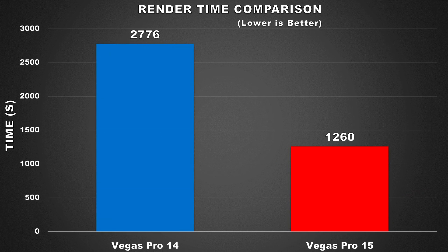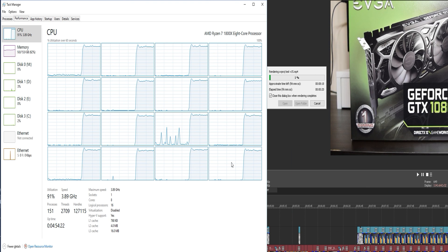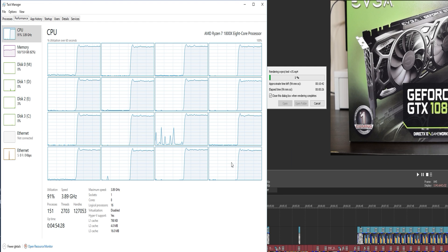So let's go ahead and take a look at the results. I have to say that I'm very impressed because whatever improvements and optimization tweaks they made, it was very effective. With Vegas Pro 14, it took 2,776 seconds or 46 minutes and 16 seconds to complete the render. However, with Vegas Pro 15, the time was cut to less than half — 1,260 seconds or 21 minutes flat, and that's without any GPU acceleration, just using the CPU to render. With Vegas Pro 14 the CPU utilization was horrible, but with Vegas Pro 15 the utilization was much better — we're seeing all threads hovering around 90 to 100%. The software is finally taking advantage of Ryzen's multi-threading performance, which it excels at.